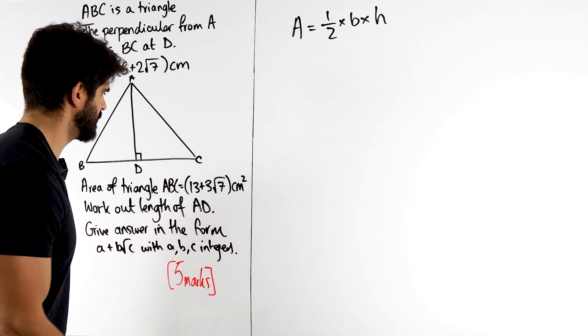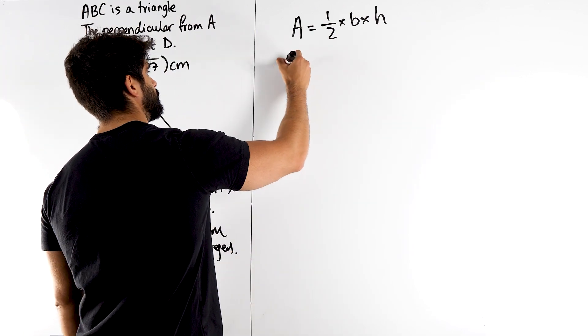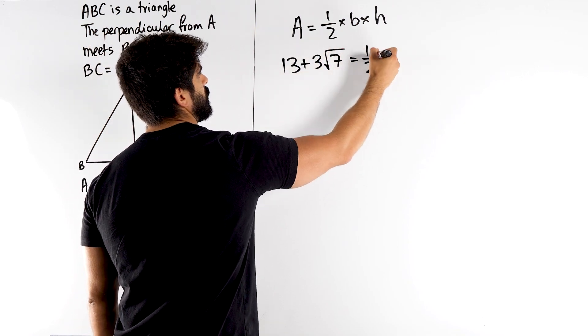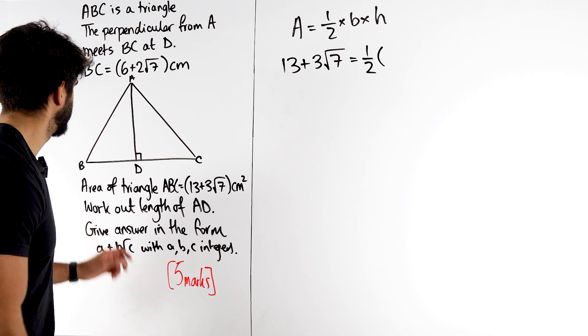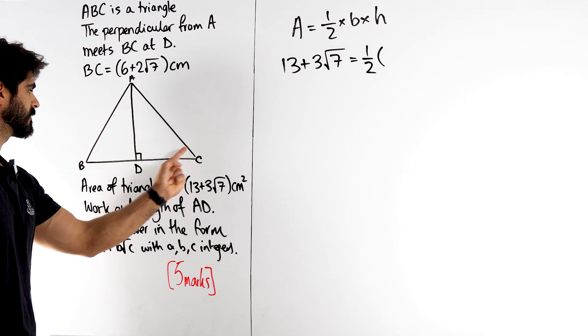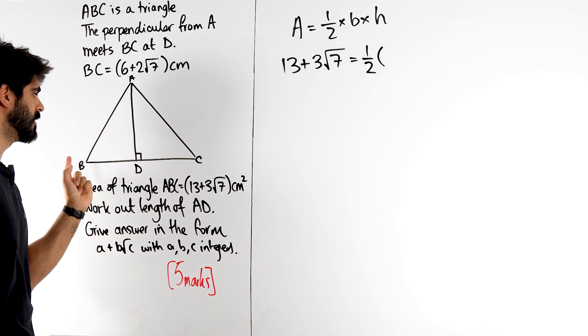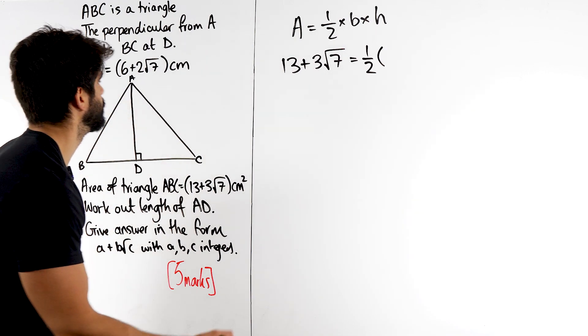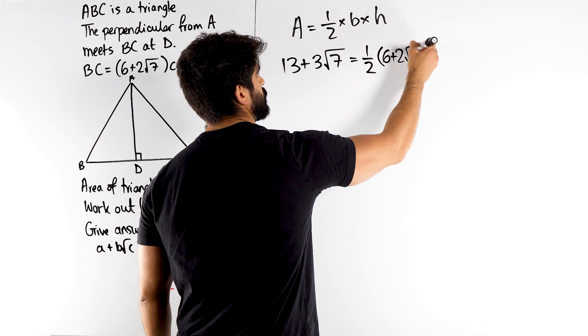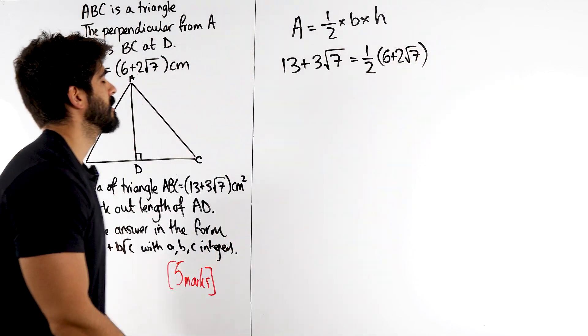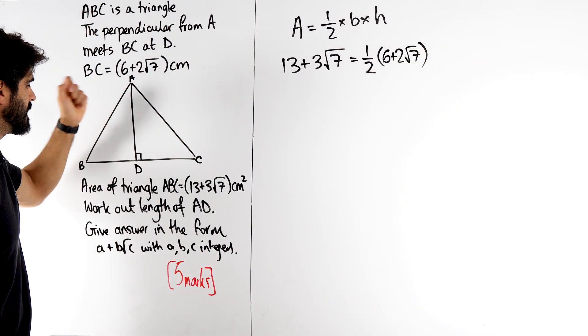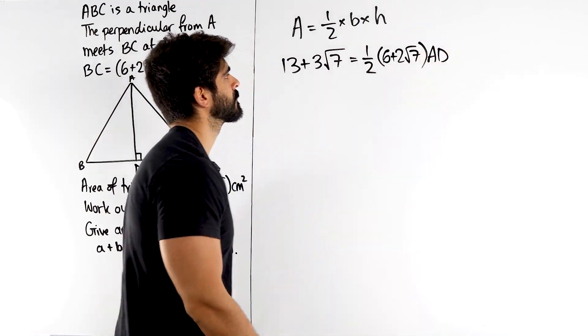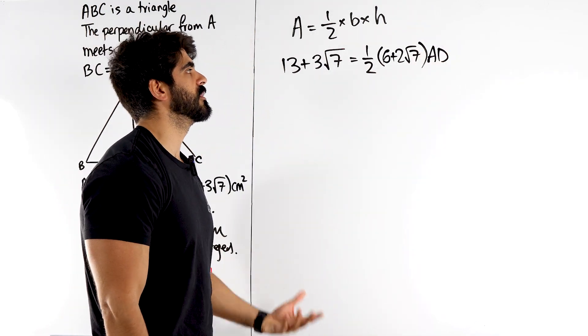They told us the area is 13 plus 3 root 7 is a half of the base length. Now, the base length is this full length here. Yeah, not this portion, not that portion. The full thing, which they told us, was 6 plus 2 root 7. And the height is the vertical height, AD, which is what they want us to find. And now we just need to rearrange for AD.